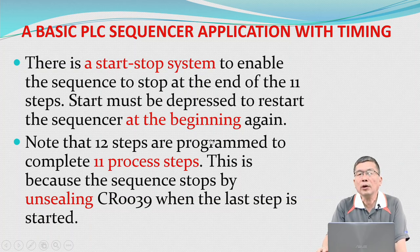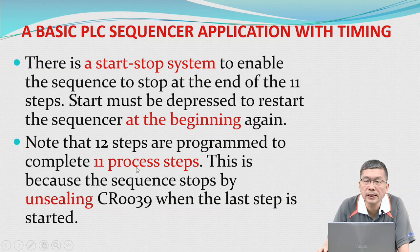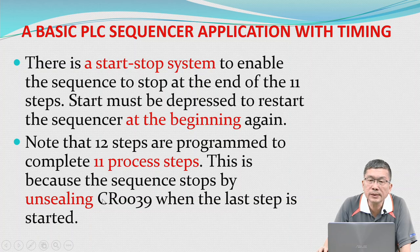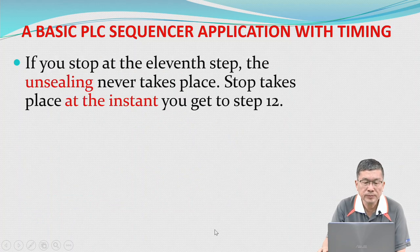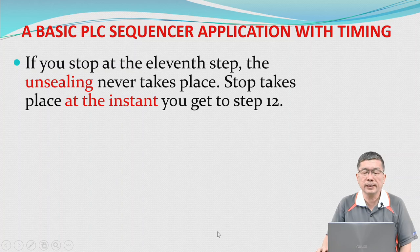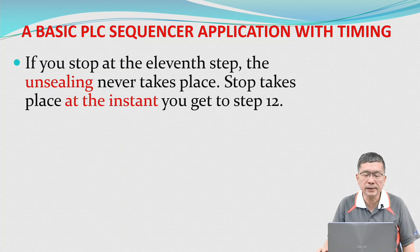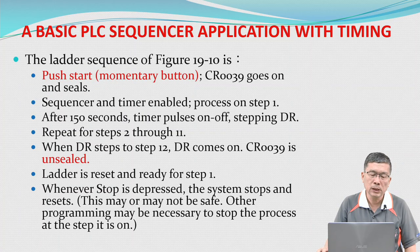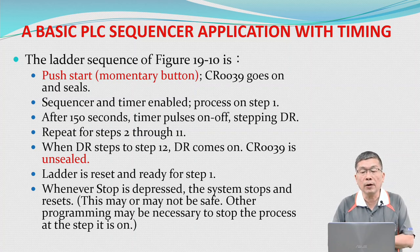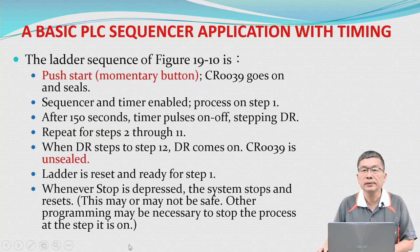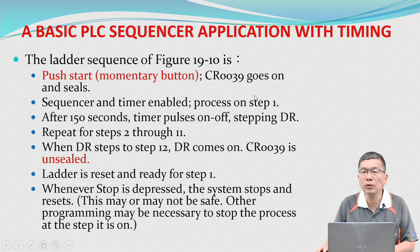Note that 12 steps are programmed to complete 11 process steps. This is because the sequence is stopped by the unsealing of control relay 39 when the last step is started. If you stop at step 11, the unsealing never takes place. Stop takes place at the instant you get to step 12. The sequence of figure 19.10: push start momentary button, control relay 39 goes on and seals.